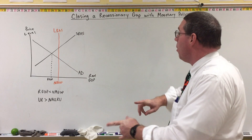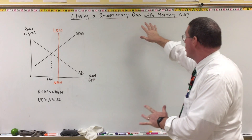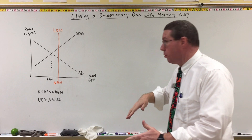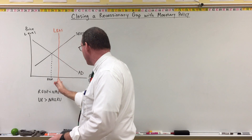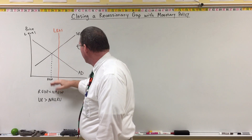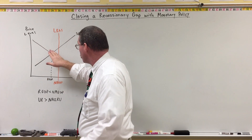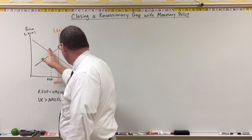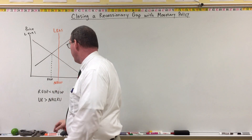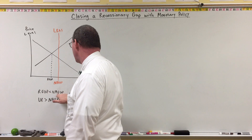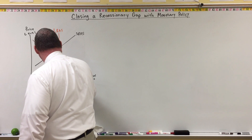Now we're going to try and understand how the Fed attempts to close a recessionary gap by using monetary policy tools. Here's an aggregate market graph. You can see the long run aggregate supply curve and natural real GDP. The short run equilibrium — where aggregate demand and short run aggregate supply intersect — is less than natural real GDP, so we're not in long run equilibrium. Real GDP is less than natural real GDP, meaning that we are in a recessionary gap.